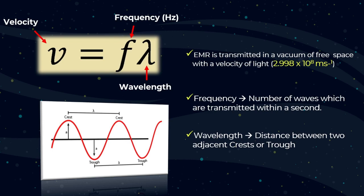The equation V equals F lambda: V means the velocity, F means the frequency which is measured in Hertz, and lambda means the wavelength. Electromagnetic radiation is transmitted in a vacuum or free space with the velocity of light. Frequency means the number of waves transmitted within a second, and wavelength means the distance between two adjacent crests or troughs.